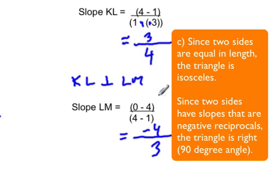And since KL and LM are negative reciprocals, then these two lines are perpendicular, so this triangle is an isosceles and a right triangle. So it's both an isosceles and a right triangle.